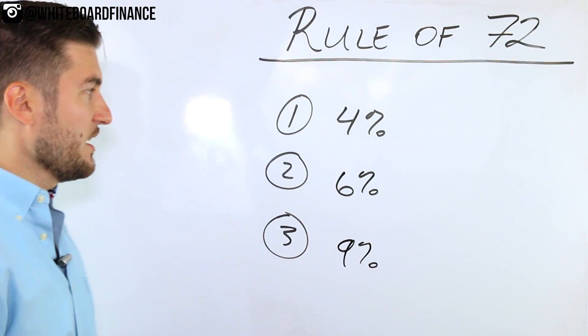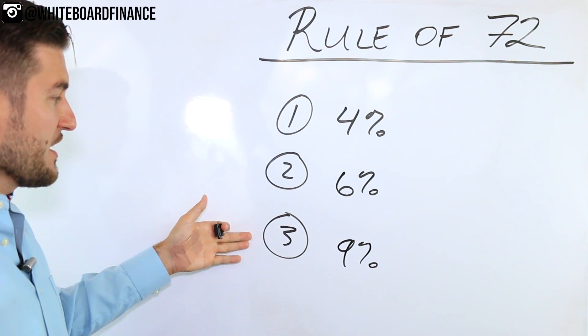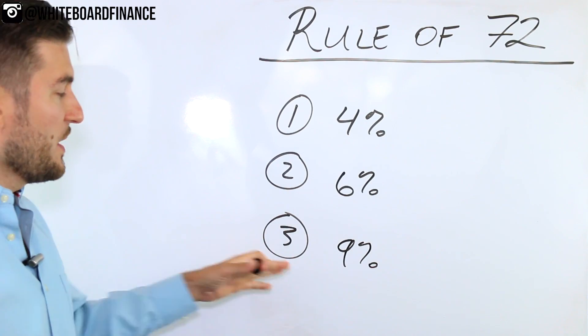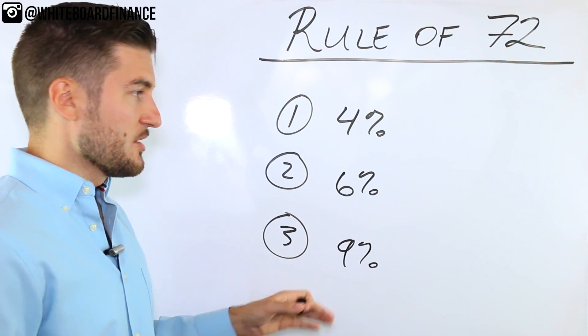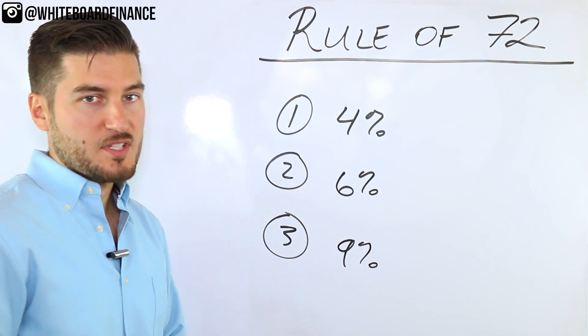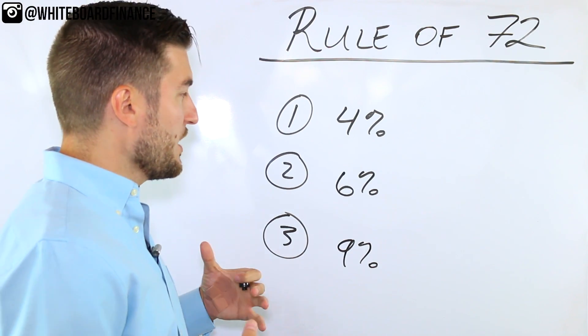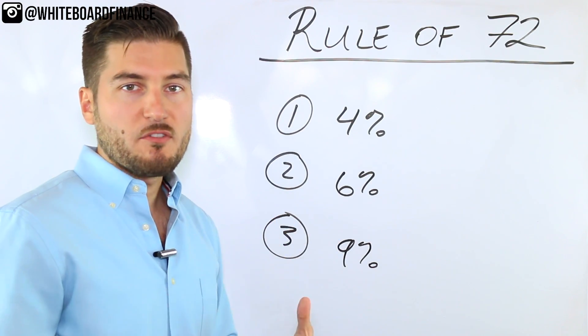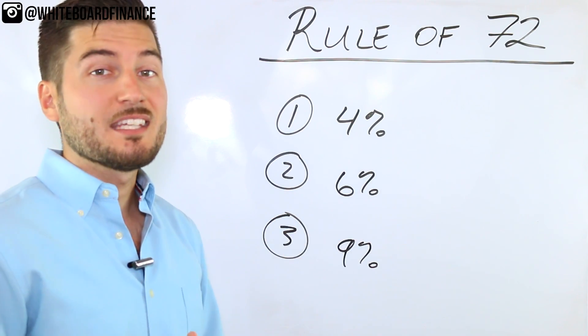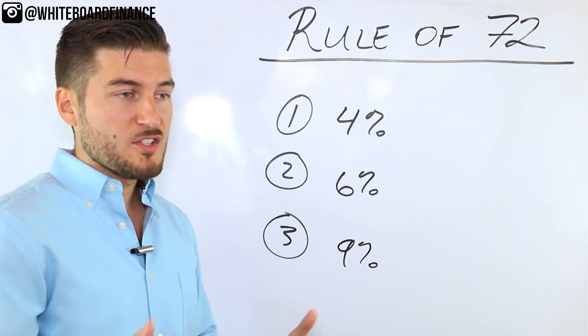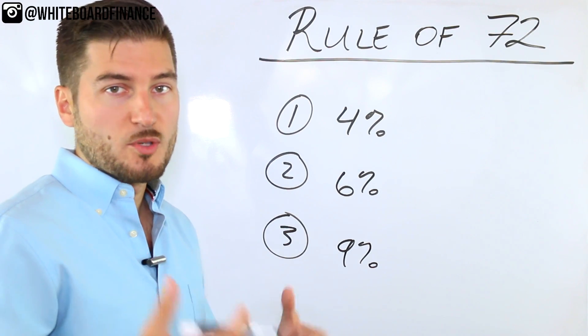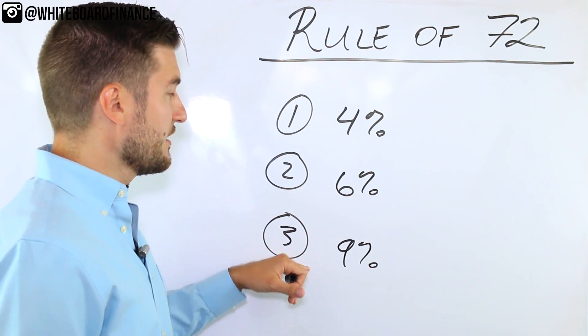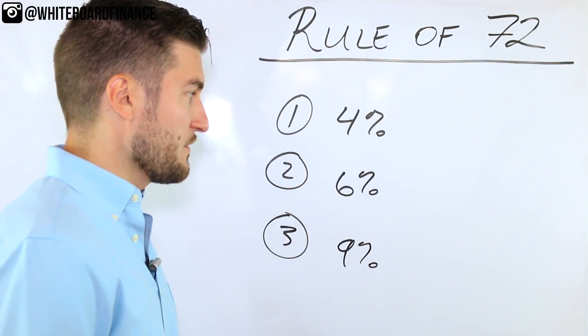So common sense would tell us, obviously, we all want to invest in the 9% investment. However, how much better is this investment really in terms of like a time frame, for example? So what would be a good way to gauge this? Say you don't have an Excel spreadsheet, say you don't have a financial calculator. It's just you and your friends, you're talking about investments and it's just your brain. How much better is this 9% really than the second investment and the first investment?